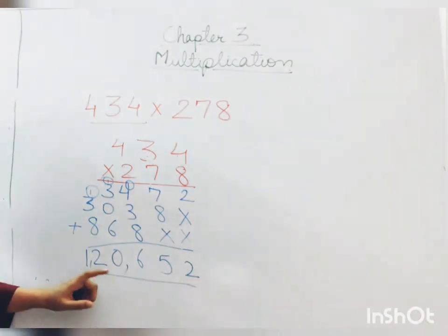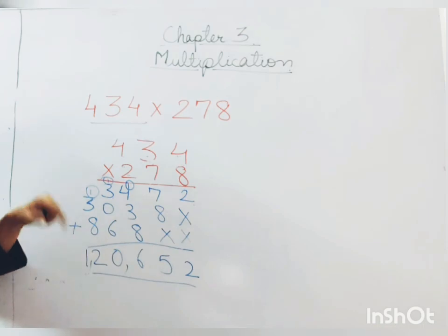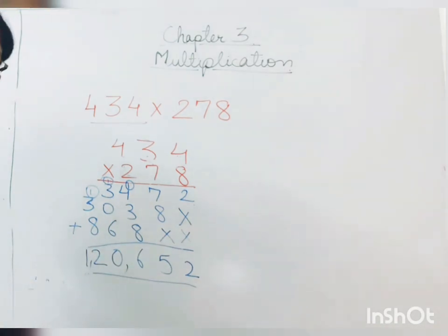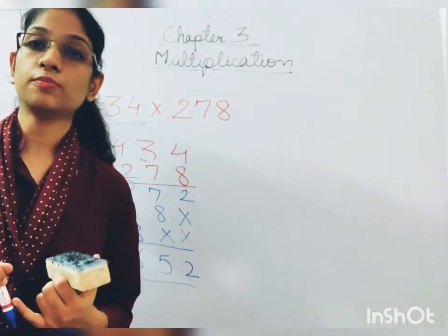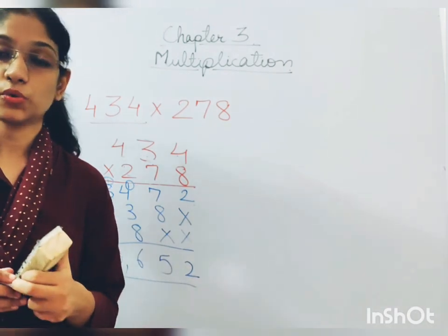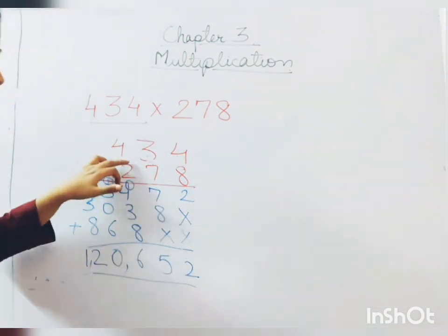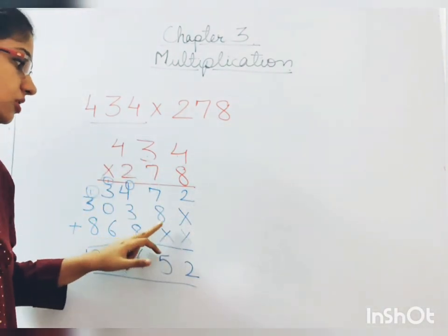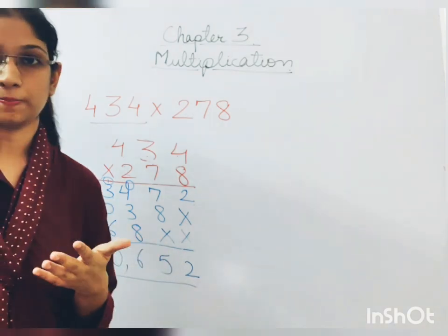This is how you are going to solve the multiplication of a 3 digit number with a 3 digit number. Now the important point to note here is to do it neatly. Erase the carryovers and put a cross as you move on to the next number.